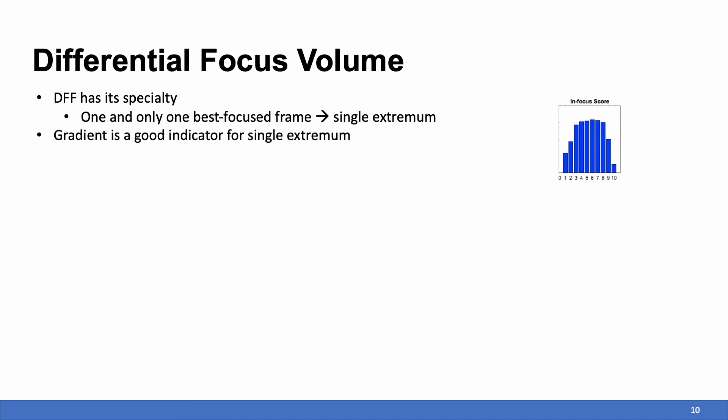It's well known that gradient is good for single extremum detection. So if we differentiate the score, we will see the best focus frame always stays on the zero crossing, which is very significant for detection.